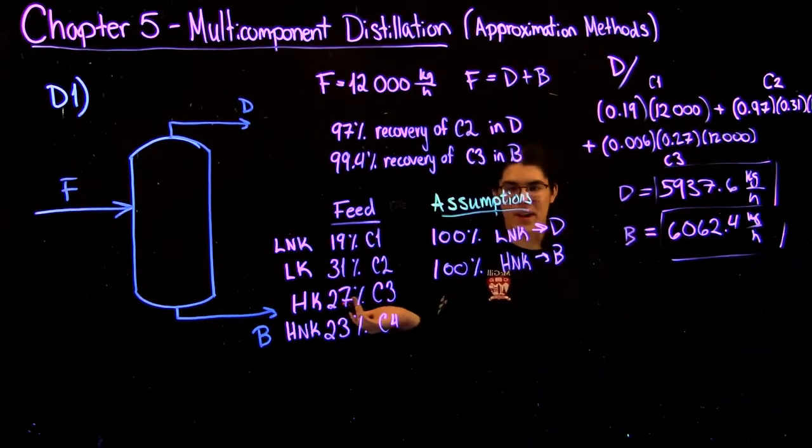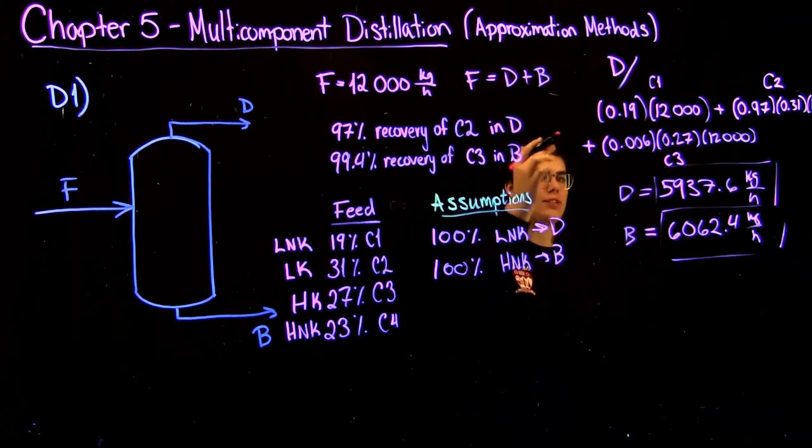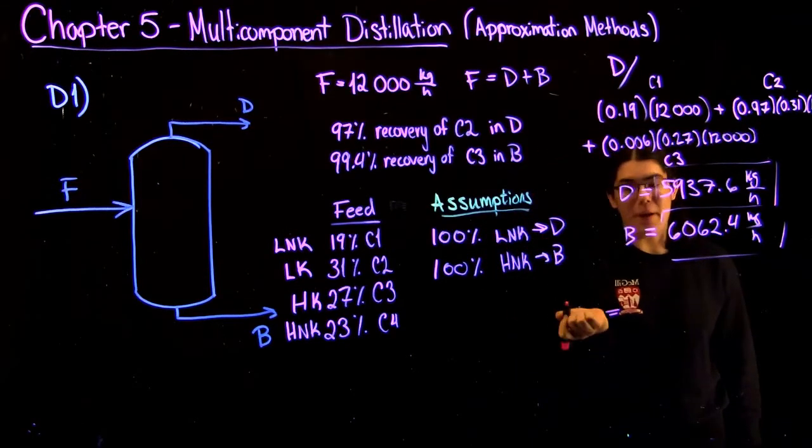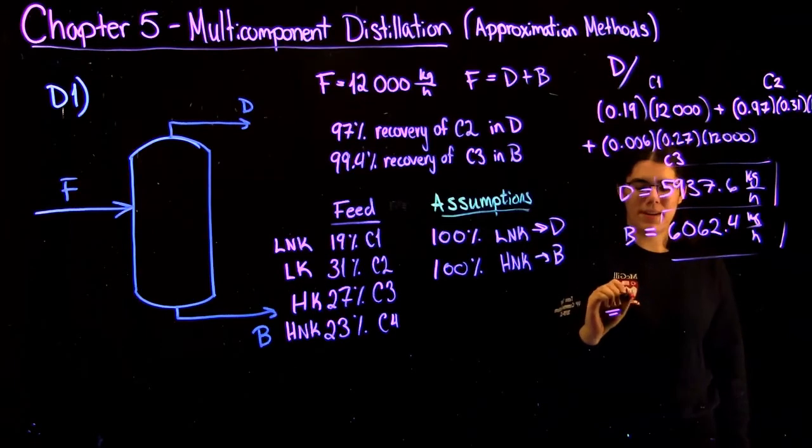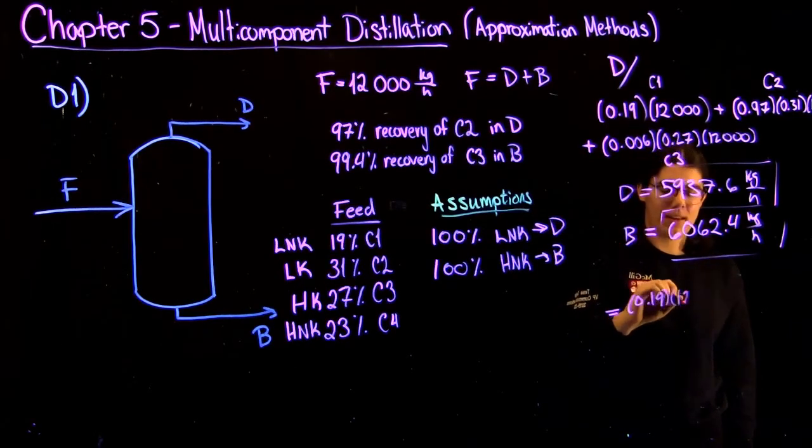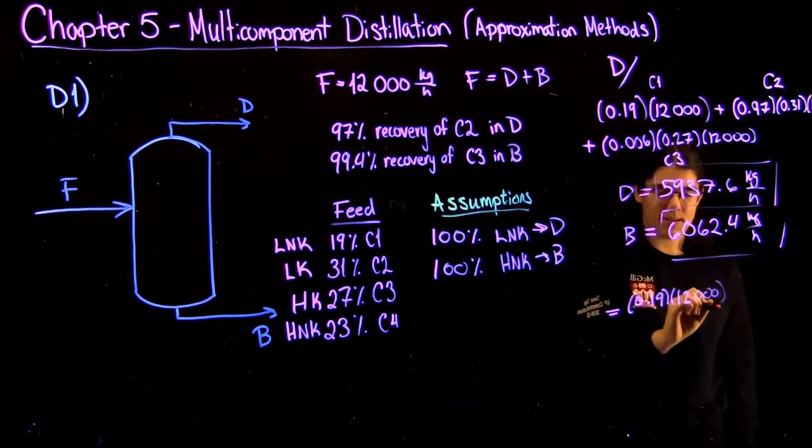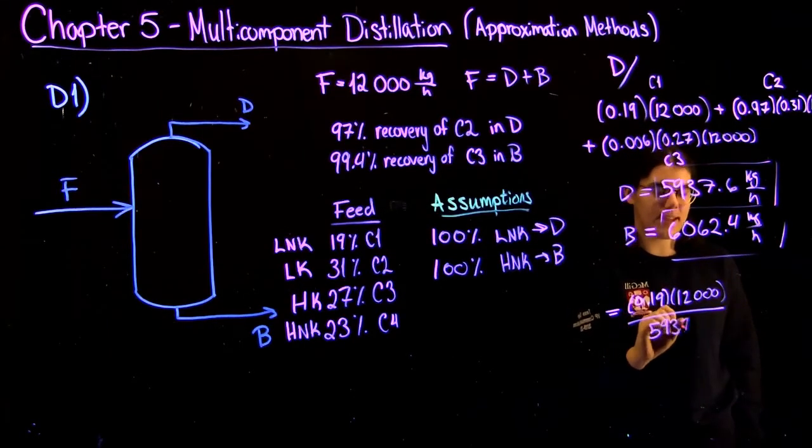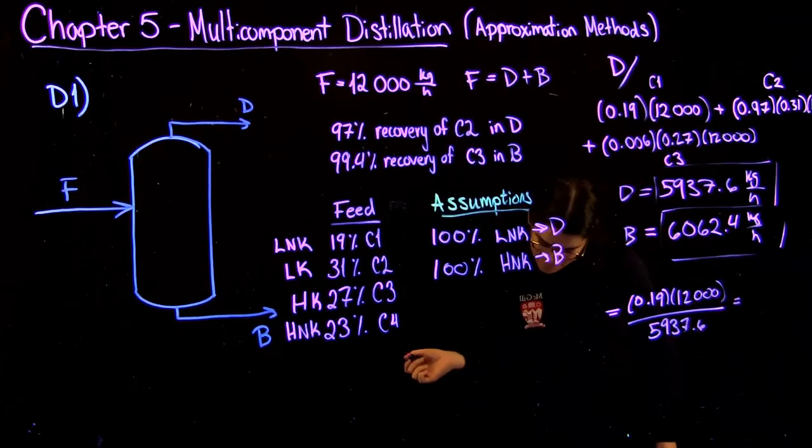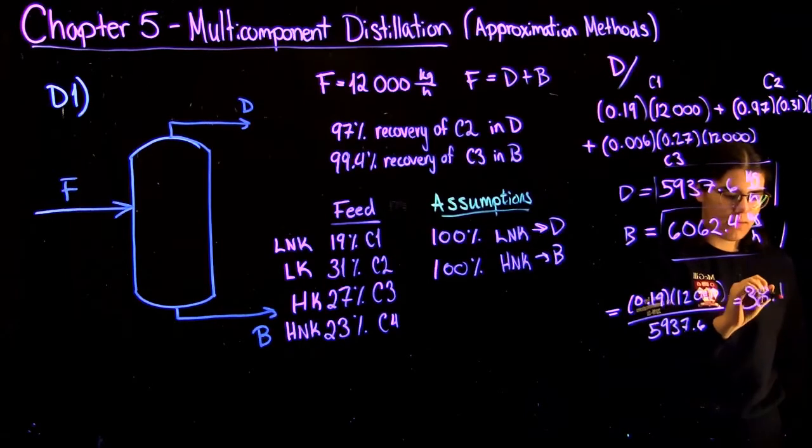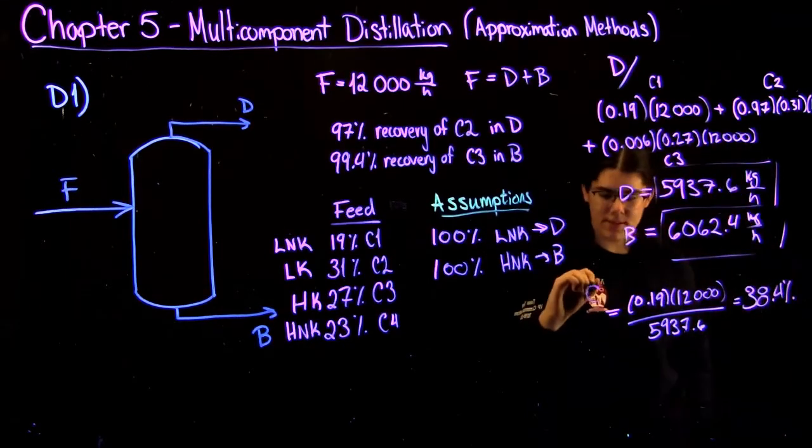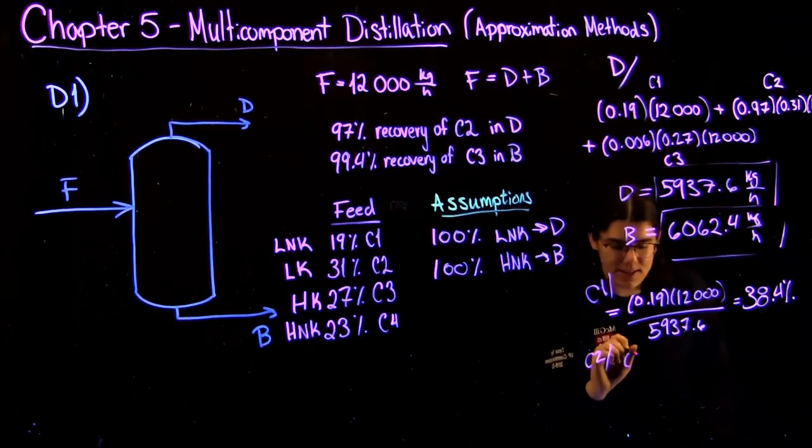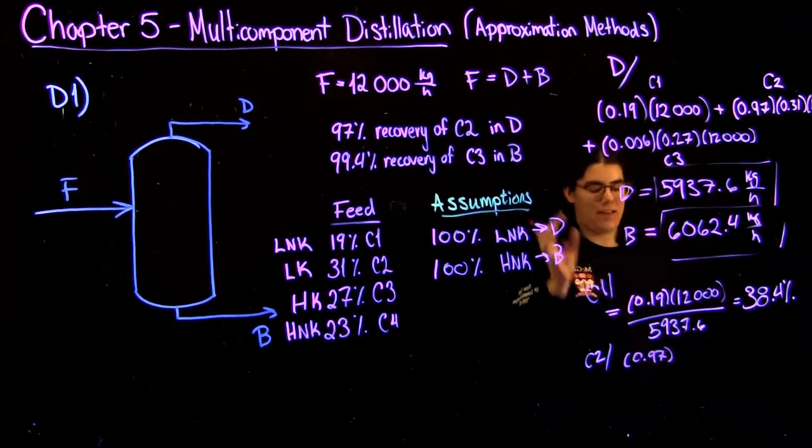And then to find out the composition of these, I'm going to do the distillate stream as an example. It's just part over total. So for C1, you have 0.19 times 12,000 over your total distillate, which is 5937.6. That'll give you 38.4%. And then C2, similar thing, exactly what we had up there. If you want, this is faster if you just calculate these in the beginning and then write them, and then you have your fractions later on that you can make a lot faster. But this is also correct, it just takes a little longer.